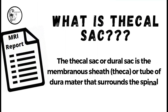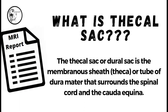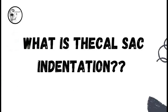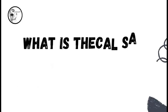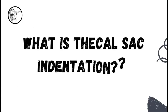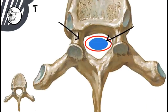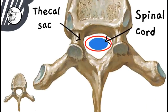The thecal sac, or the dural sac, is a membranous sheath or tube of dura mater that surrounds the spinal cord and the cauda equina. Now let's discuss what thecal sac indentation is, with the help of some diagrammatic representations.